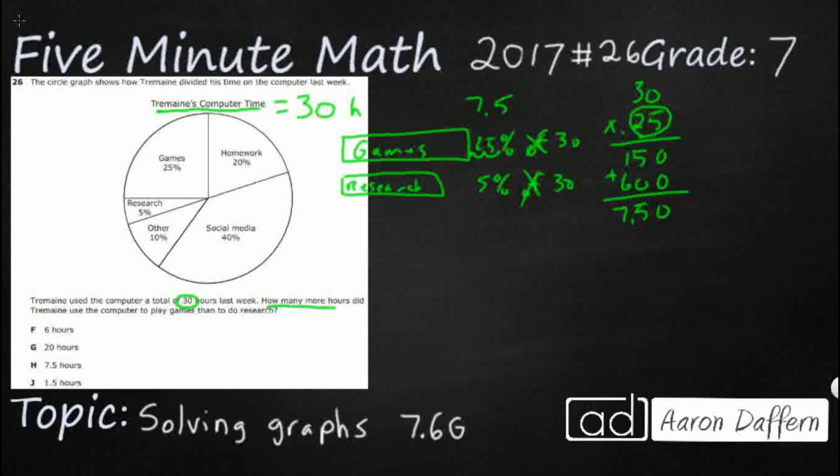And then we'll do the same thing for research. Now, remember, if the decimal is at the end, because there is no decimal, we have to move it over once, twice. So it's not 0.5. It's 0.05. One little trick there. So let's do 30 times 0.05. 0.15. The next row is just a whole bunch of zeros. So I'm just going to leave it like that. Remember, I have two digits by the decimal in my factor. So two digits by the decimal in my product. So 1.5.